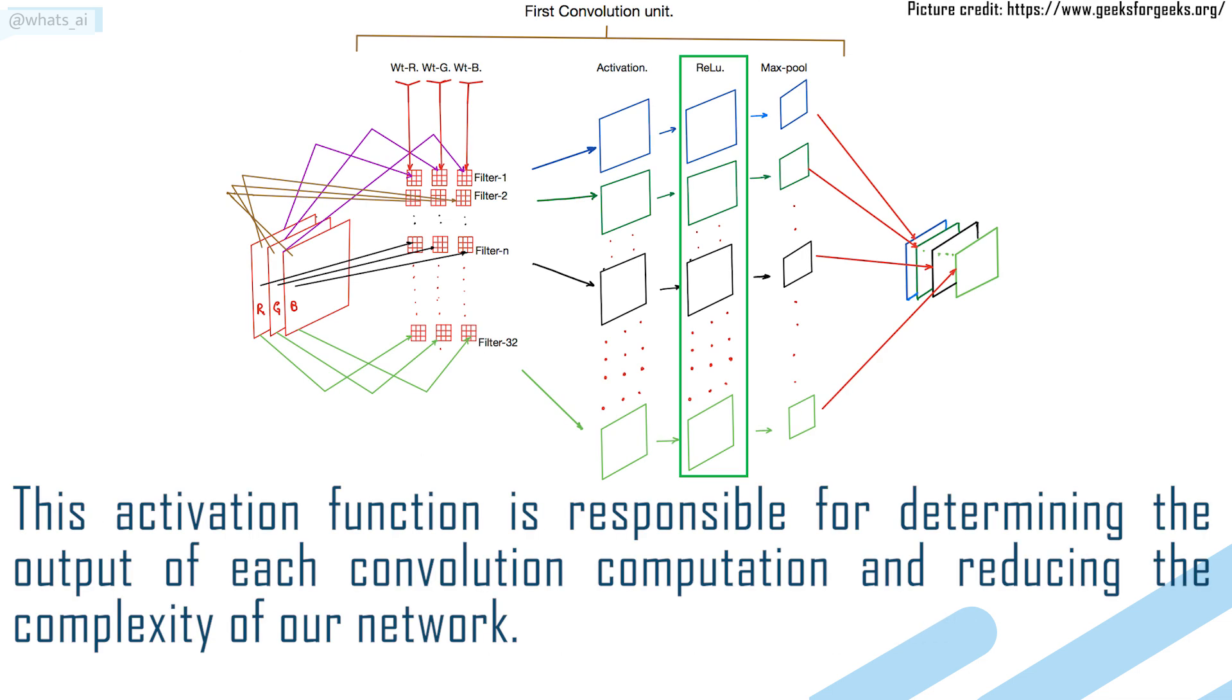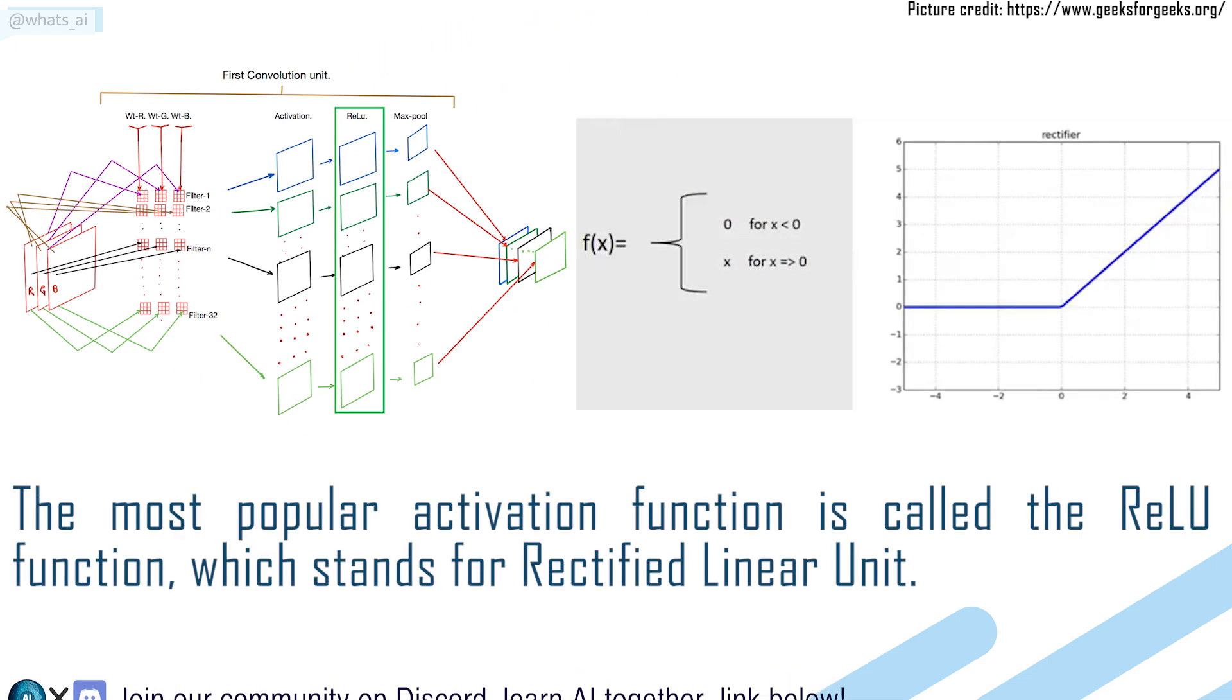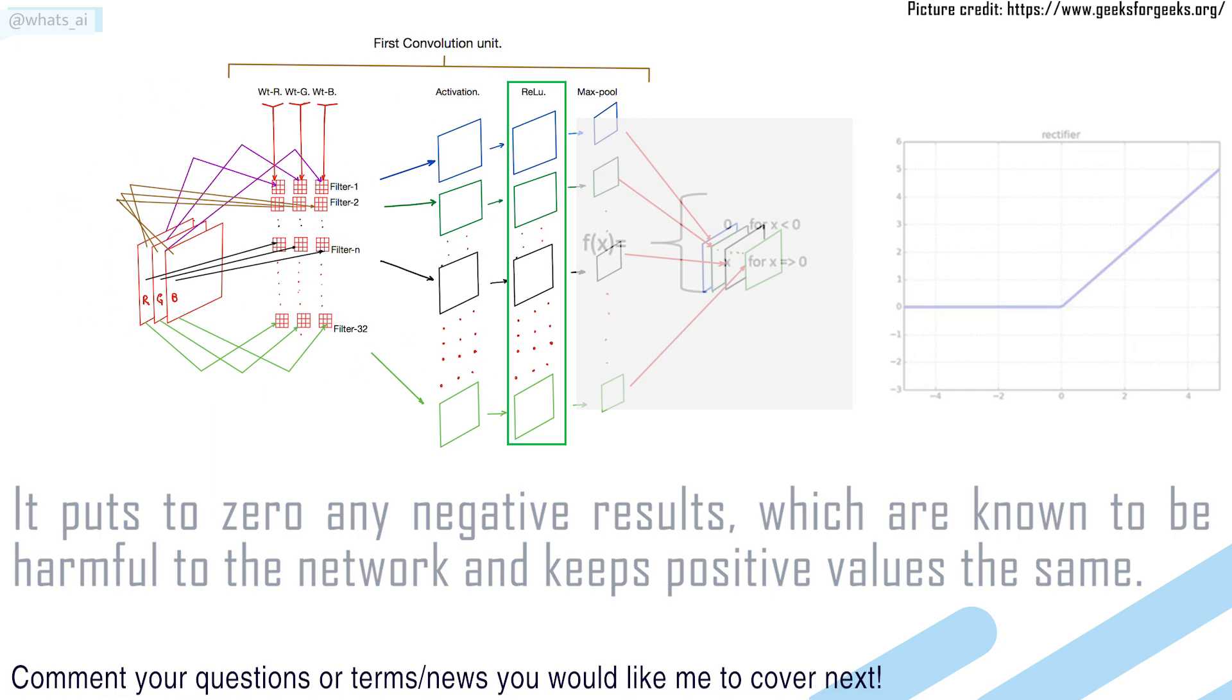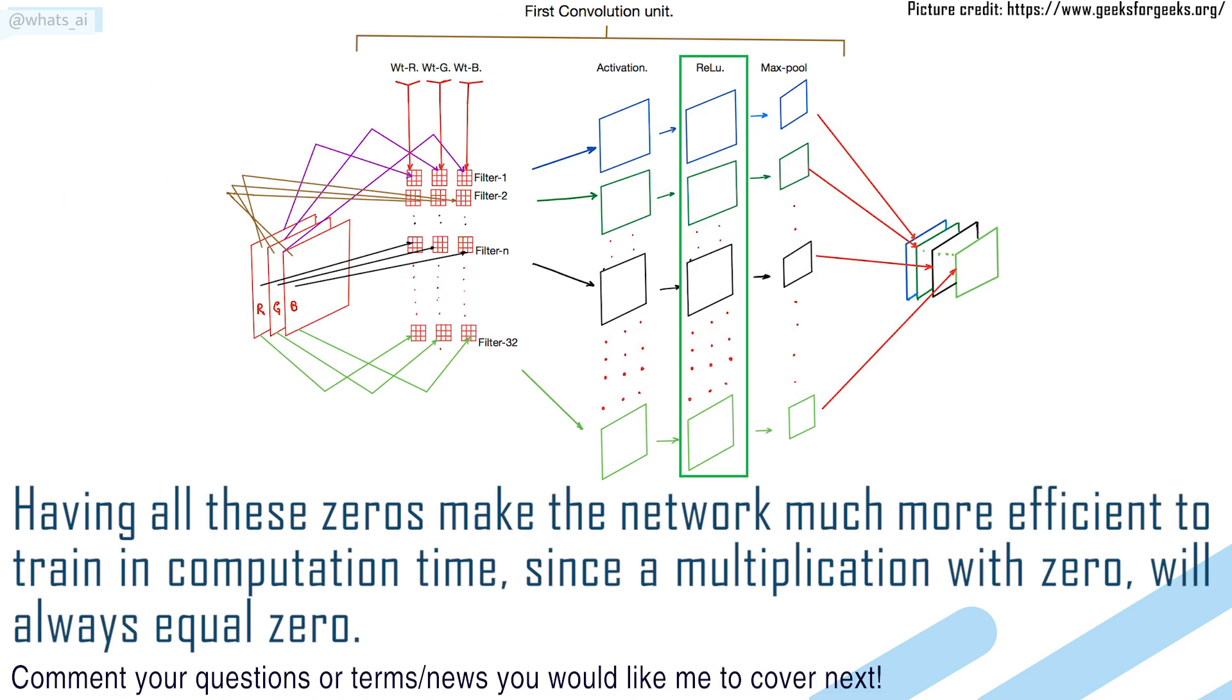This activation function is responsible for determining the output of each convolution computation and reducing the complexity of our network. The most popular activation function is called the RELU function, which stands for Rectified Linear Unit. It puts to zero any negative results, which are known to be harmful to the network, and keeps positive values the same. Having all these zeros makes the network much more efficient to train in computation time, since a multiplication with zero will always equal zero.